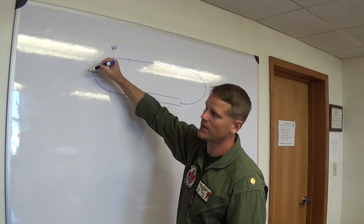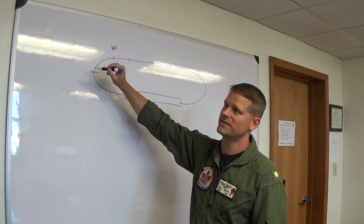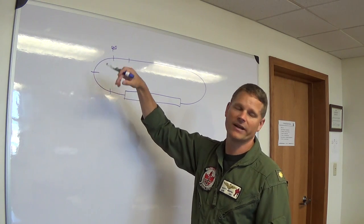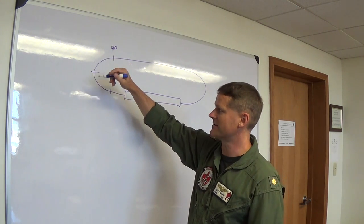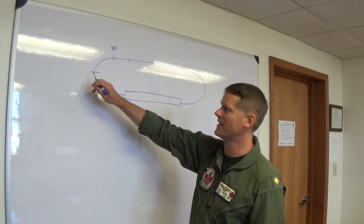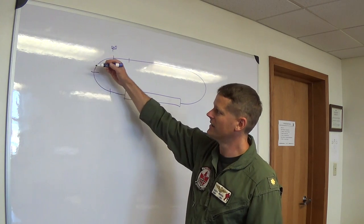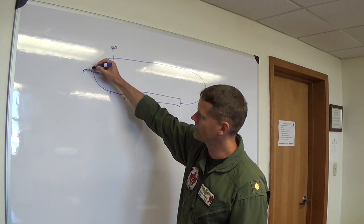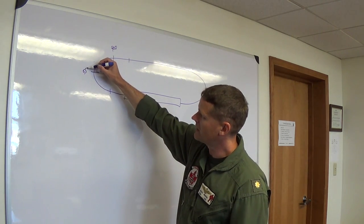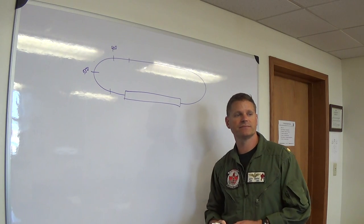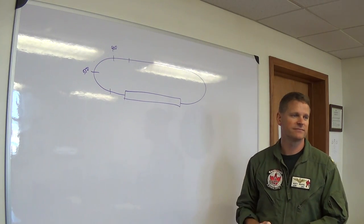What is it AGL? 450 feet. What's my field elevation? 100 feet. So therefore my 90-position would be 550 feet MSL.